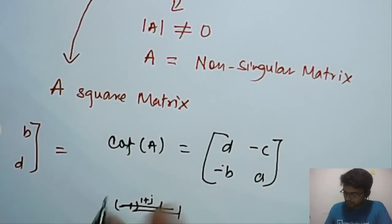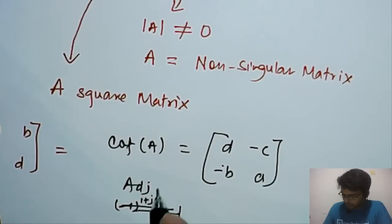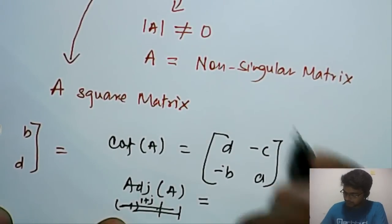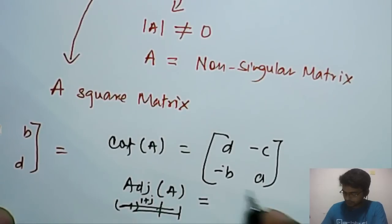Then if we take transpose, so the adjoint of this A will be equal to the transpose of this matrix. So, what will be the transpose? D, minus C and then minus B and A.